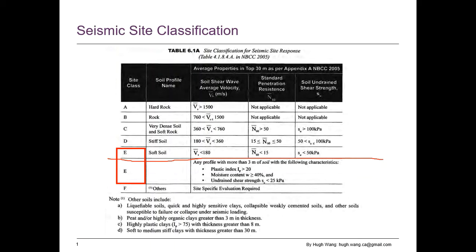A site with class E will strongly amplify long period ground motions. The upper E uses the average properties in the top 30 meters. The lower E applies when there is more than 3 meters of soil — if conditions meet class E criteria using that threshold, you can classify it as E instead of using the full 30 meters. That's the difference between the upper E and the lower E.